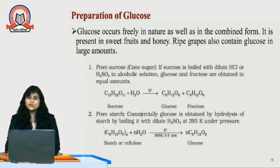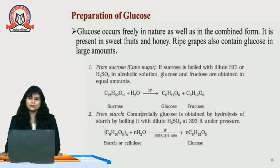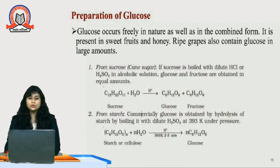The first method of preparation is from sucrose, that is cane sugar. If sucrose is boiled with dilute HCl or H2SO4 in alcoholic solution, then glucose and fructose are obtained in equal amounts. So sucrose is the larger unit — if sucrose is boiled with dilute HCl, we get one unit of glucose and one unit of fructose. Both glucose and fructose have the same molecular formula: C6H12O6.